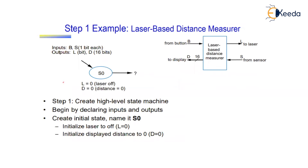For the high-level state machine, the inputs are b and s — each 1 bit — and outputs are l (1 bit) and d (16 bit). As for local registers, unlike the soda dispenser example which used a 'total' register, we don't know yet what local registers we'll need; we'll discover them as we build the state machine.